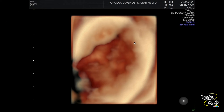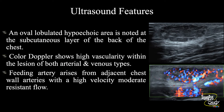Here is the 3D image of the lesion taken with a volumetric convex probe. In summary: an oval lobulated hypoechoic area is noted at the subcutaneous layer of the back of the chest. Color Doppler shows high vascularity of both arterial and venous types. The feeding artery arises from adjacent chest wall arteries with high velocity moderate resistant flow. These features are consistent with a case of superficial hemangioma.